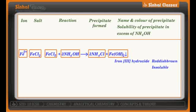So what do you notice? Magnesium chloride gave a precipitate of magnesium hydroxide; ferrous sulfate gave ferrous hydroxide; ferric chloride gave ferric hydroxide. All three precipitates give the same color in both cases — with sodium hydroxide as well as ammonium hydroxide — and all three precipitates are insoluble in both excess sodium hydroxide and excess ammonium hydroxide.